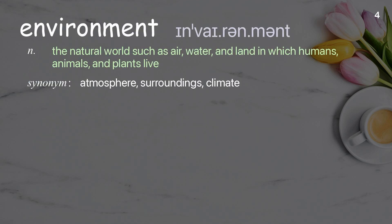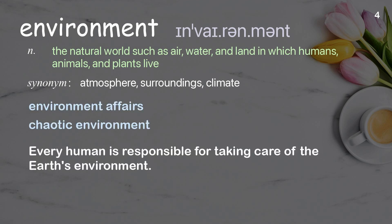Environment: the natural world such as air, water, and land in which humans, animals, and plants live. Examples: chaotic environment. Every human is responsible for taking care of the Earth's environment.